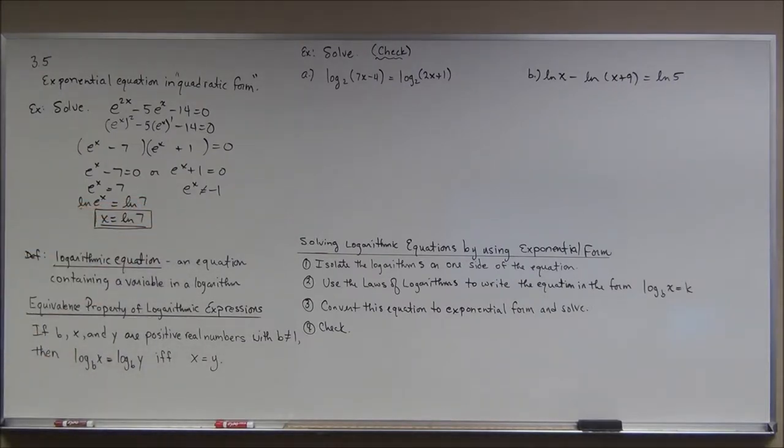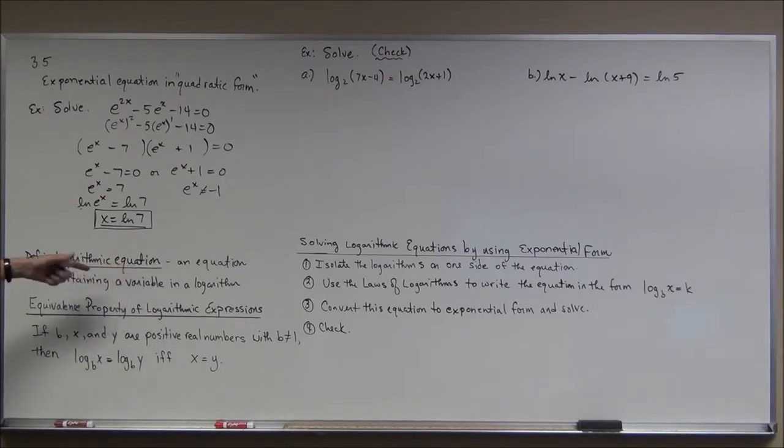A logarithmic equation is an equation that contains a variable in the logarithm. So that kind of makes sense. Although they always tell you don't create a definition of something that uses the terms of what you're trying to define. We're going to use this property, which sometimes is called the fourth law of logarithm, the equivalence property of logarithmic expressions.